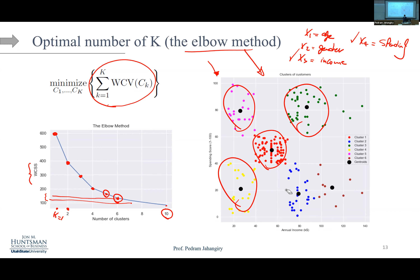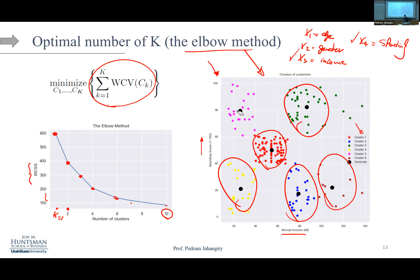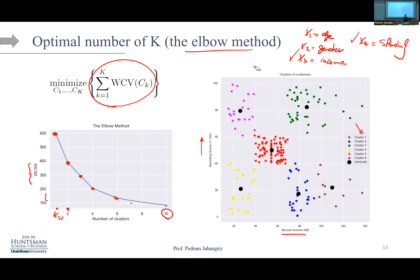This is the customer mall dataset: annual income versus spending score, where higher spending score means more willingness to spend. Looking at the clusters, which group would be the best target for distributing coupons? Consider that cluster 5 has high spending score but lower income — they're very willing to spend but can't afford it. Giving them coupons makes sense. You might also target a nearby cluster of willing-but-moderate-income customers.